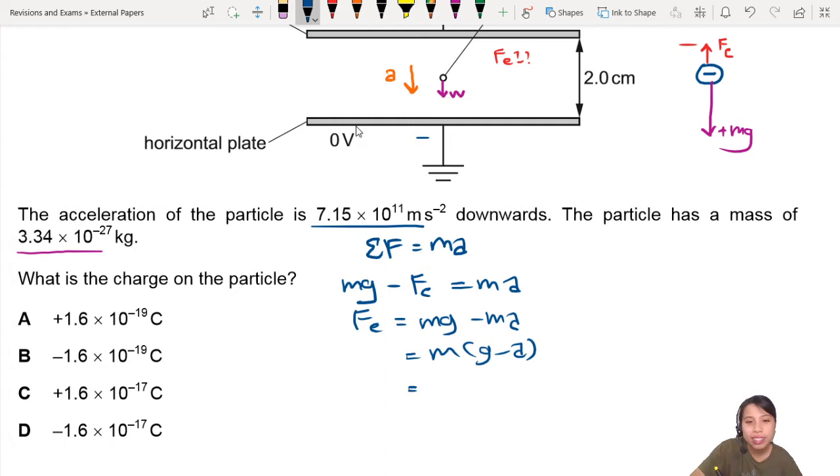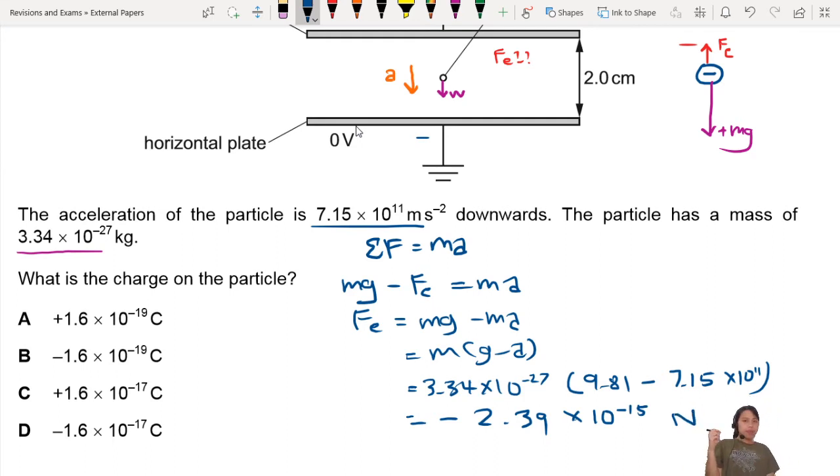Let's calculate. So 3.34 times 10 to the negative 27, times 9.81 minus a very big acceleration, 7.15 times 10 to the 11. Oh my, we are going to have a negative number. What does that mean? So you will get negative 2.39 times 10 to the negative 15 newtons. Something is funny here.